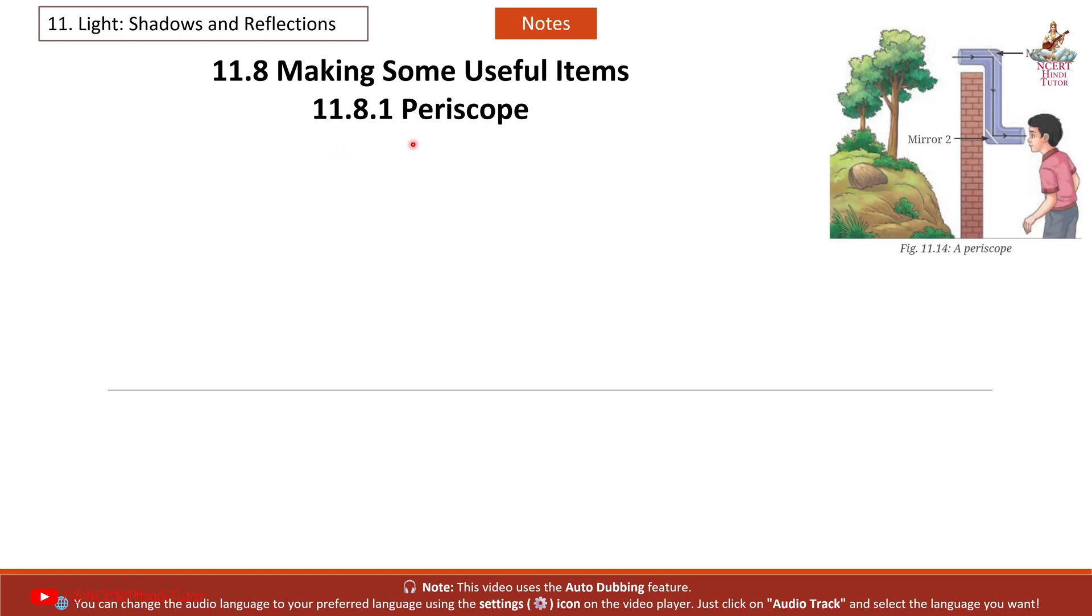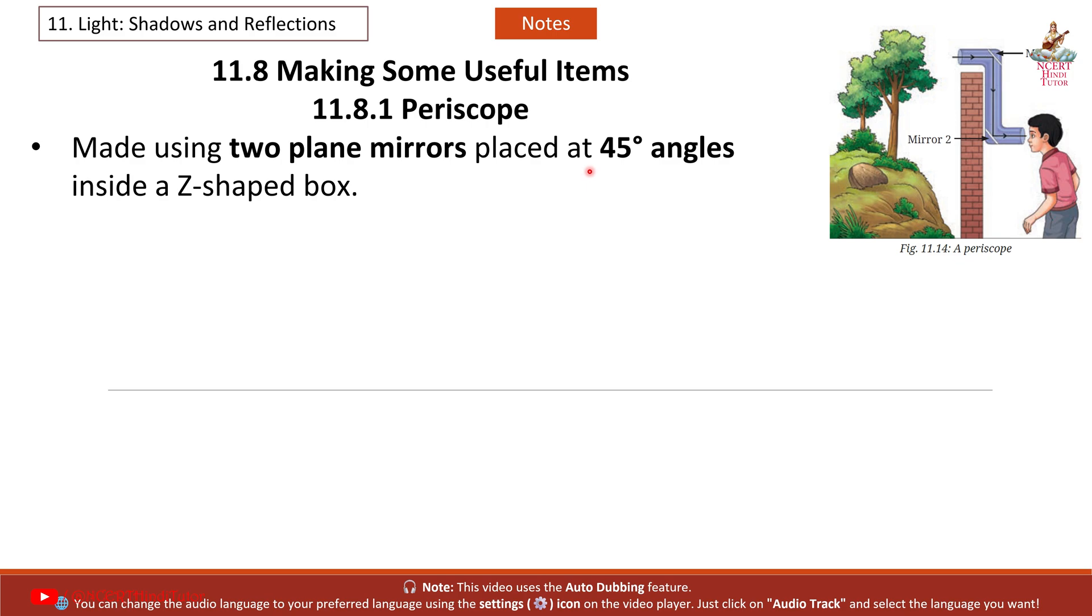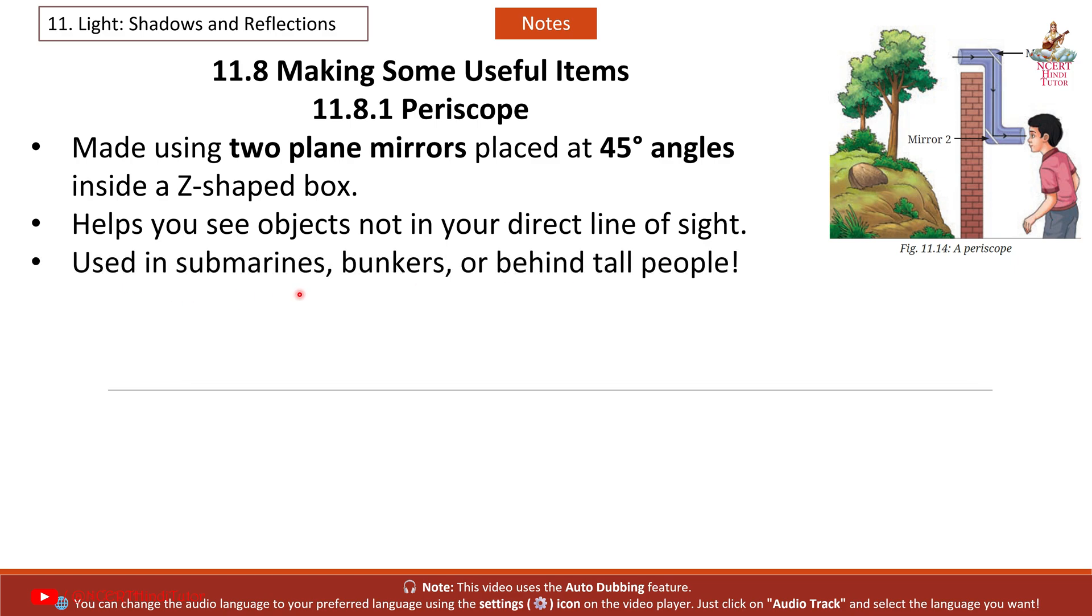11.8 Making some useful items. 11.8.1 Periscope: Made using two plane mirrors placed at 45 degree angles inside a z-shaped box. Helps you see objects not in your direct line of sight. Used in submarines, bunkers or behind tall people.